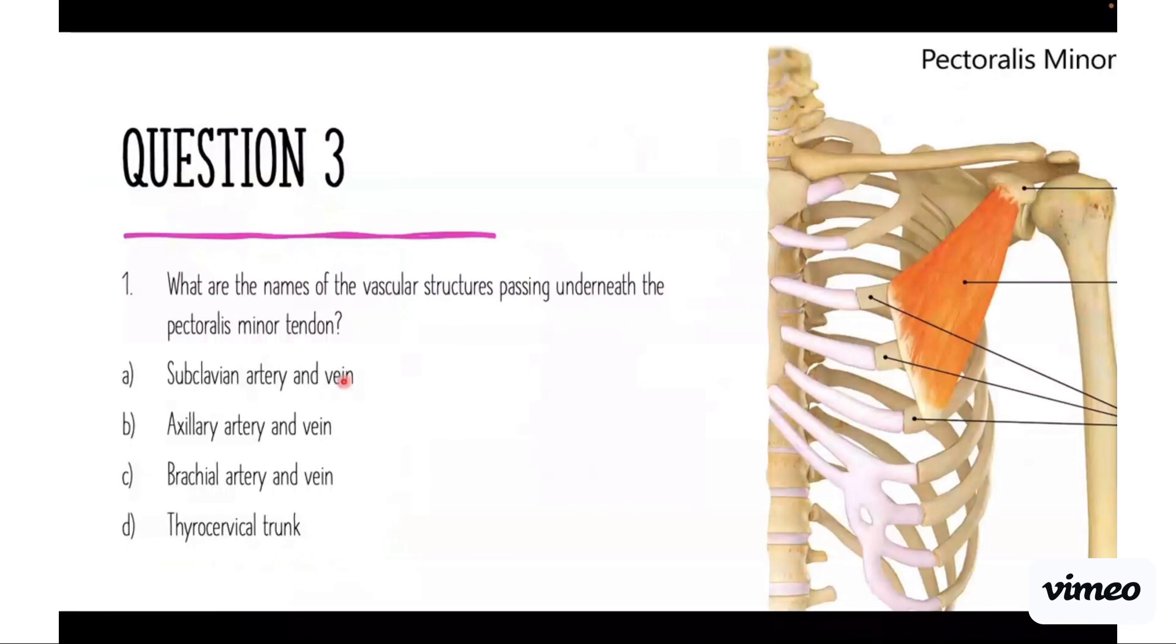Last question: What are the names of the vascular structures passing underneath the pectoralis minor tendon? Is it the subclavian artery and vein, the axillary artery and vein, brachial artery and vein, or the thyrocervical trunk? At this level, it's the axillary artery and vein that are passing underneath the pec minor. So let's look at those final videos.